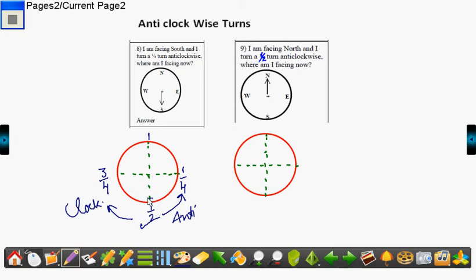So 1/4th turn anti-clockwise, that means you were at south, you covered this much part and you reached here, which coincides with east moving this way. Hence, you have reached the direction east.